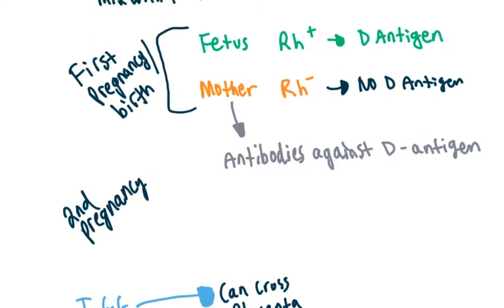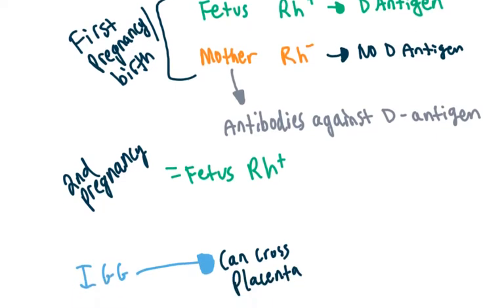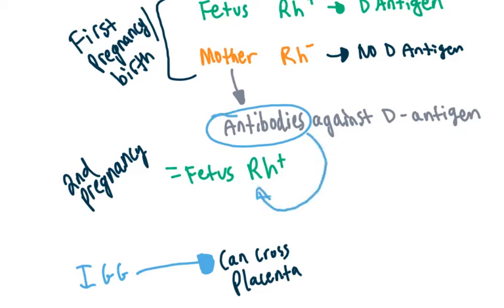Now, during the second pregnancy, if the fetus turns out to be RH positive again, this is where RH incompatibility comes into play. The mother already has antibodies against the D antigen. Those antibodies can cross the placenta and enter the fetus's blood, where they can start agglutinating the fetus's blood — because the fetus has the D antigen on its red blood cells and we're sending D antigen antibodies to the fetus.